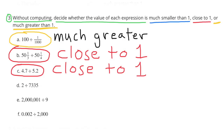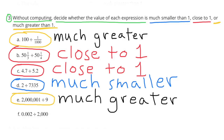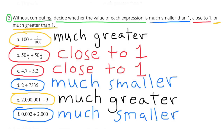C: close to 1, again because the dividend and the divisor are close in value. D: much smaller — this is true because the dividend is very small compared to its large divisor. E: much greater, because its dividend is very large and its divisor is much smaller. F: much smaller than 1, because its dividend is very small compared to its very large divisor.